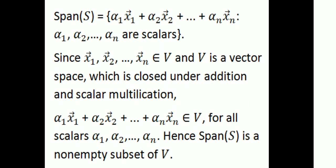V is a vector space which is closed under addition and scalar multiplication, satisfying the 10 axioms. So x₁, x₂, ..., xₙ are elements of V. Since V is closed under scalar multiplication and vector addition, α₁x₁ + α₂x₂ + ... + αₙxₙ is an element of V for all scalars α₁, α₂, ..., αₙ. Hence span(S) is a non-empty subset of V.